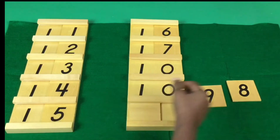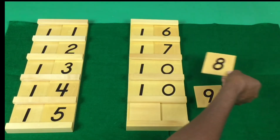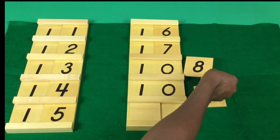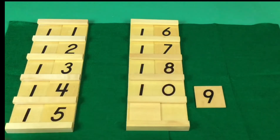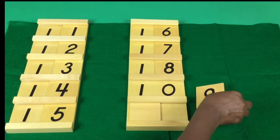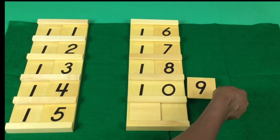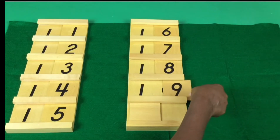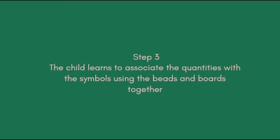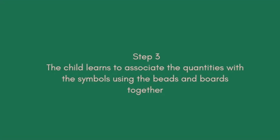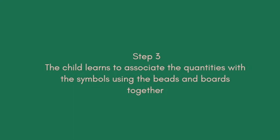What comes after 17? The child says 18. What comes after 18? The child says 19. The child learns to associate the quantities with the symbols using the beads and boards together.